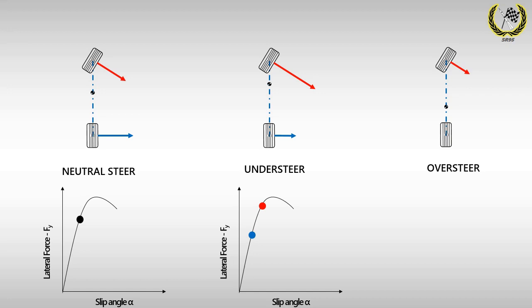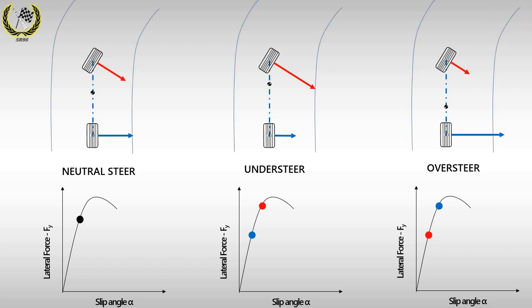In oversteer, the CG is rear biased and hence the opposite effect is seen with the rear tyre having to generate more lateral force. This naturally means that the rear tyre is closer to its cornering limit. Now, let's place all three vehicles at a corner. In understeer, if the lateral force of the front increases any further, the front tyre loses its grip and there is an imbalance in the moment.